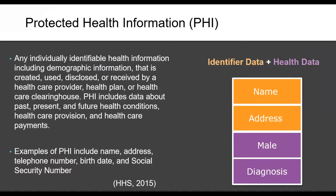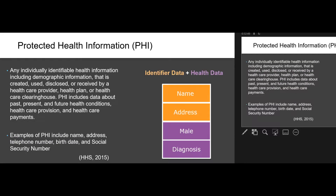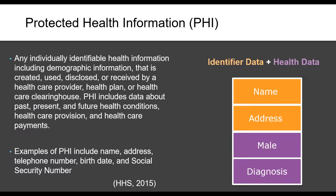We call this data protected health information, or PHI. PHI is any individually identifiable information that is created, used, disclosed, or received by specific types of health organizations. In order to be considered PHI, it must include both identifier information about a person as well as health-specific information. One very important identifier is a person's address. Location is a critical variable that bad actors or malicious people may use for successful re-identification attacks and resulting privacy breaches.